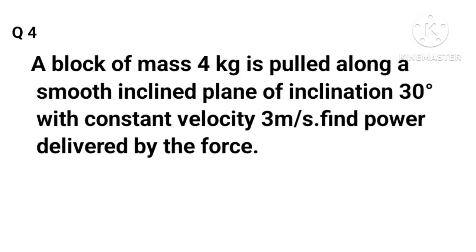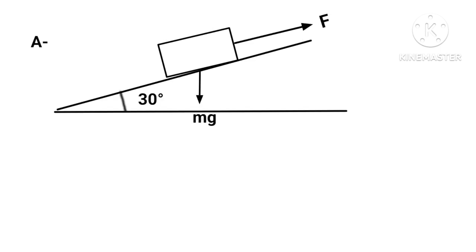A block of mass 4 kg is pulled along a smooth inclined plane of inclination 30° with constant velocity 3 m/s. Find the power delivered by the force. The following forces act on the body: weight mg acting vertically downwards, reaction R perpendicular to the plane.